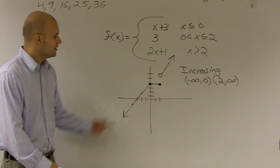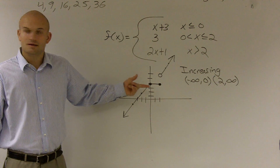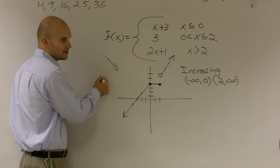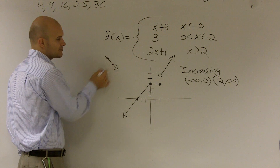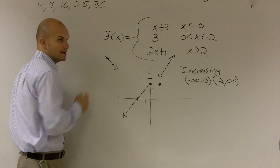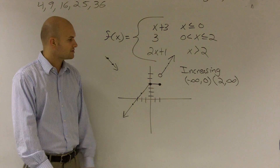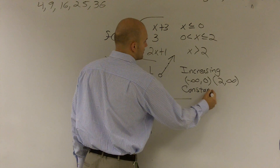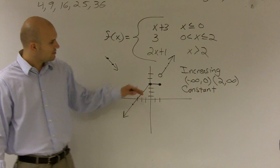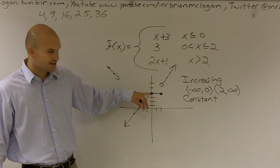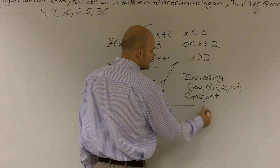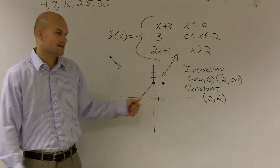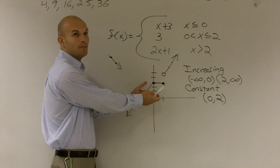Then we look at decreasing — when is the rightmost point less than the leftmost point? There is no graph that would show a decrease where the rightmost point has a smaller output than the leftmost point. So there are no decreasing intervals. Last, we look for constant intervals. Between 0 and 2, the graph is constant, meaning there is no change — if you pick two points, their output values are exactly the same.